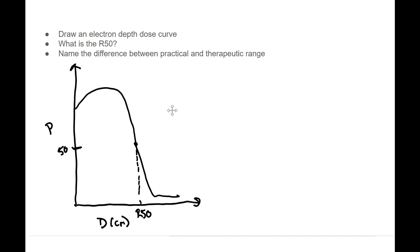When we are wanting to talk about therapeutic and practical ranges, I'm just going to call this RT. So that is where we are getting 80 to 90% of our dose, the therapeutic range, right? Makes sense. And typically that is given by your energy divided by three.